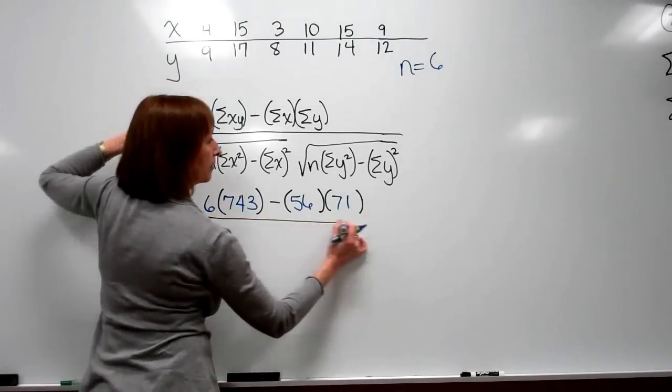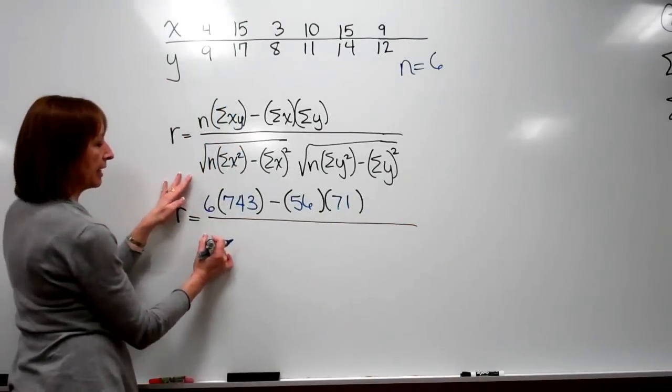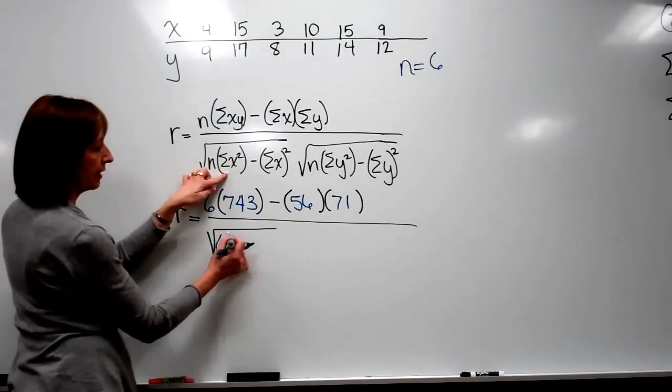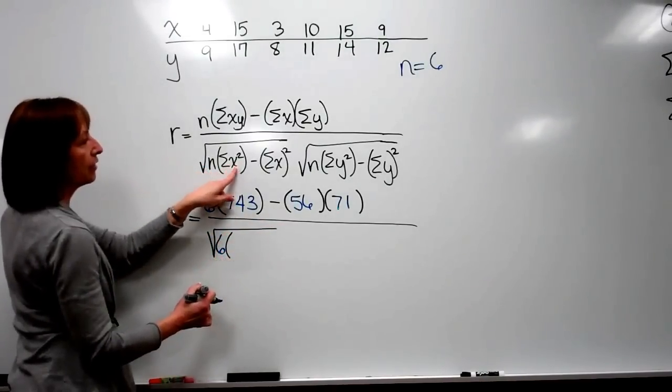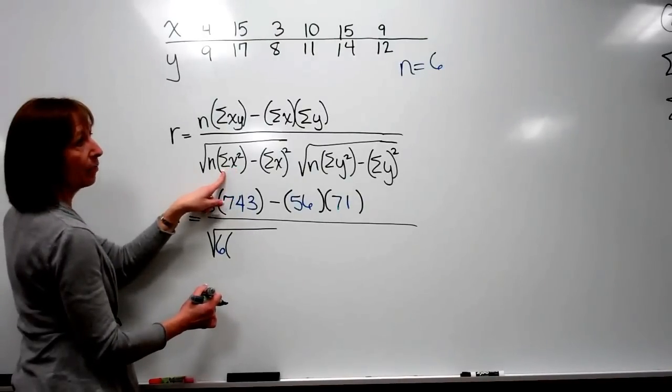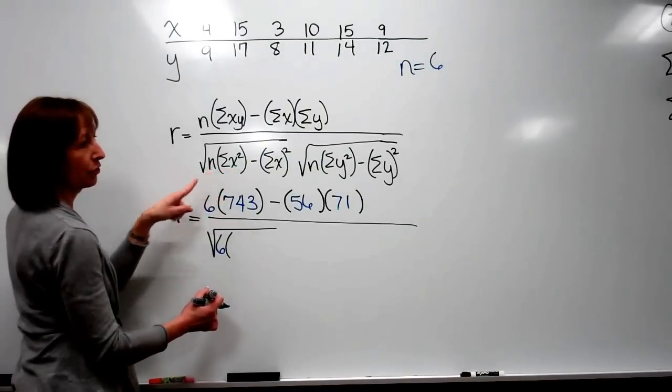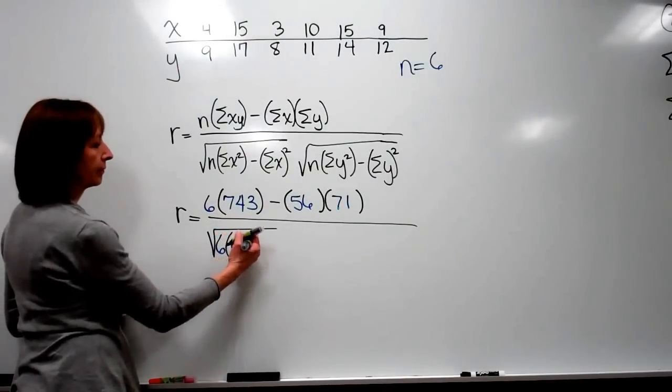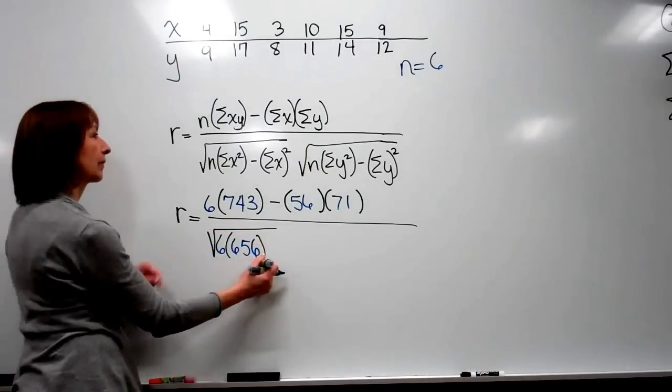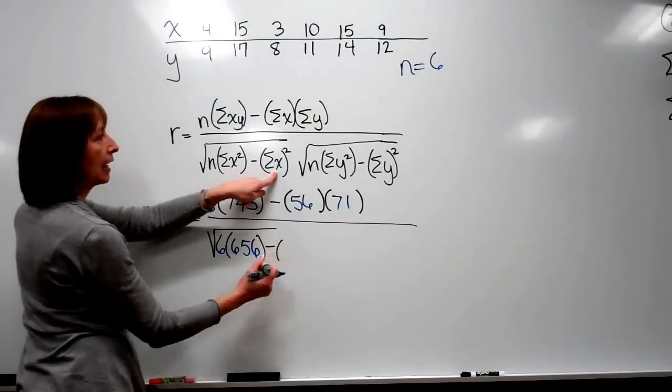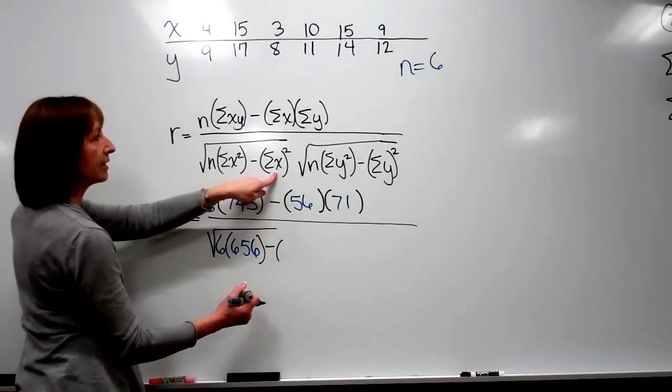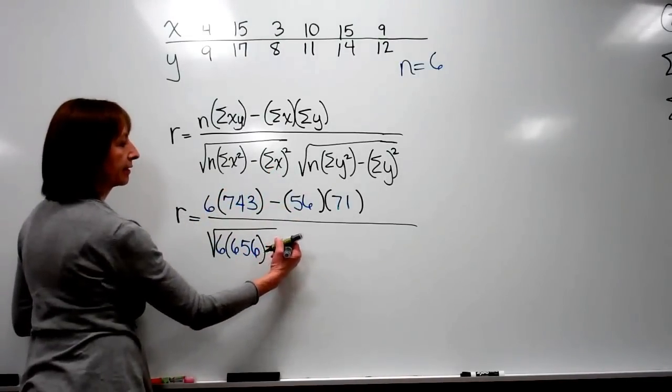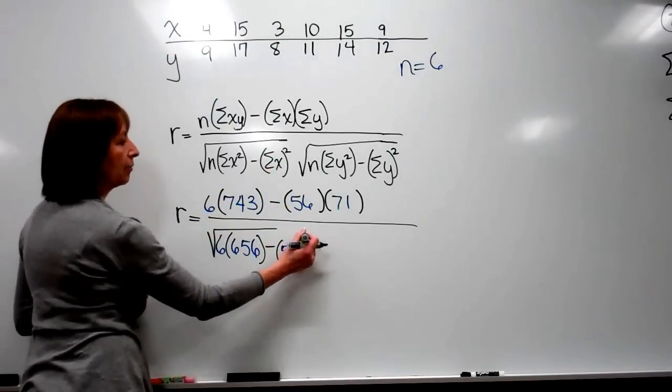And now my fraction bar, and in the denominator I have the square root of, again, n which is 6, times, square each individual x, and then add up all the values of the x's once you square them. That's 656 minus, and now I'm going to take the total of my x's, we already talked about the total of the x's, and that was the number 56. And that number gets squared.